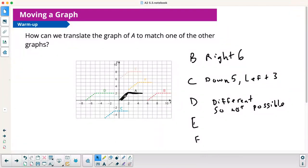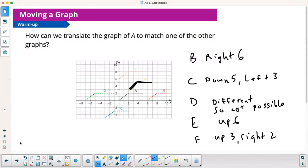So to get to E, I just go up 6. And then to get to F, I'm going to go up 3, right 2. All right, so there you go.